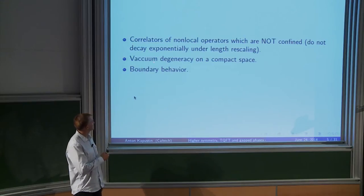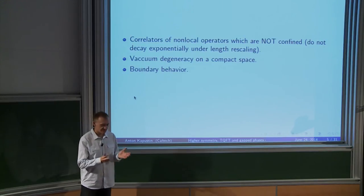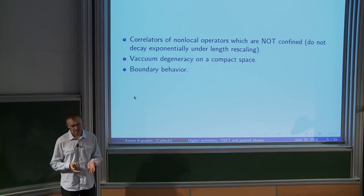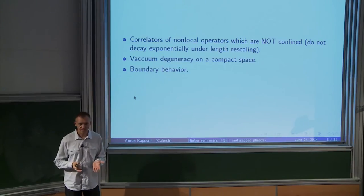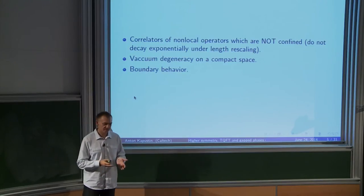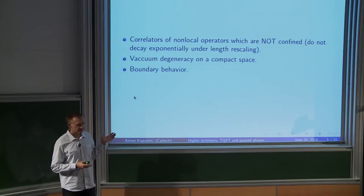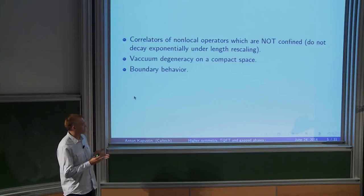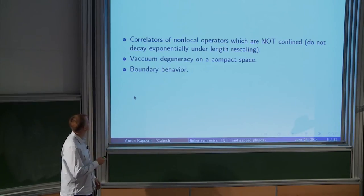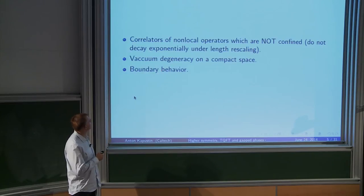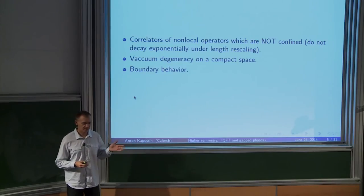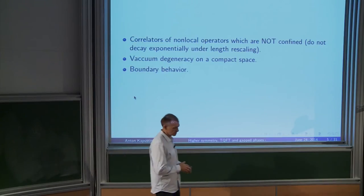Now let me review some old stuff: how to classify Higgs phases of gauge theories, where a superconductor is an example. What happens there is you have a condensate — the vacuum has a condensate of electrically charged particles — and there's a spontaneous breaking of gauge symmetry. You start with some G₀ which is a microscopic gauge group, but at long distances all you see is some subgroup of G₀ called G. For a gapped phase, G has to be finite. If G is not a finite group, you have photons which are massless, and then it's not a gapped phase. So the low-energy physics is described by gauge theory with finite gauge group G.